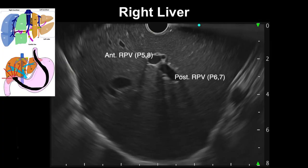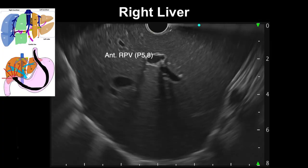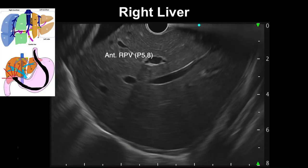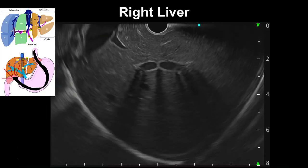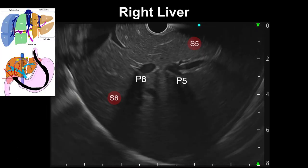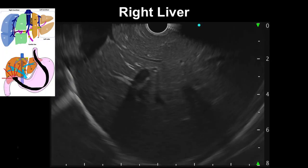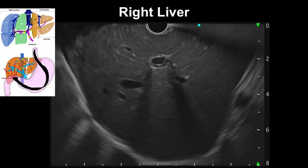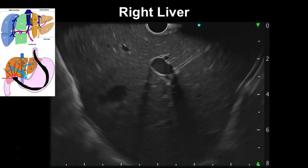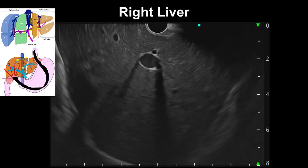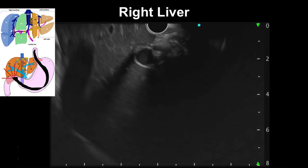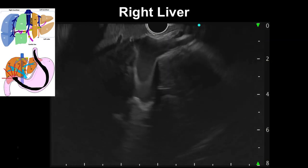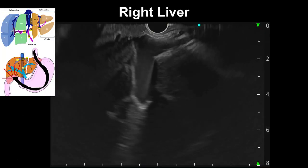The right anterior portal vein can be further traced to its division into the branch to segment 5 close to the transducer and segment 8 in the lower part of the screen. From this position, with clockwise rotation and progressive upward movements of the big knob, the right portal branches can be followed back to the right portal vein and to the main portal confluence at the hilum of the liver.